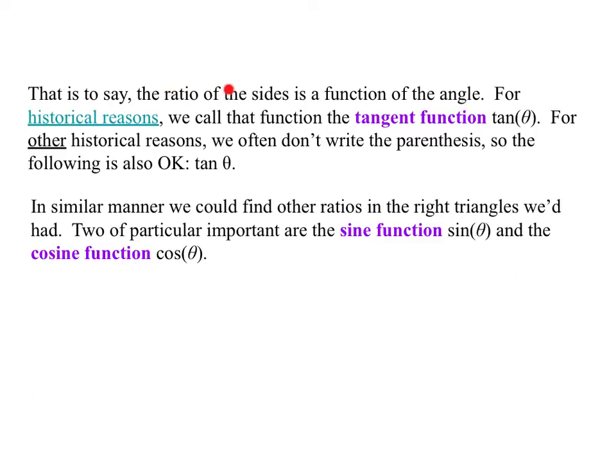That is to say, the ratio of the sides is a function of the angle. For historical reasons, we call that function the tangent function, and we abbreviate it as tan of theta. For other historical reasons, we often don't write the parentheses, so we also can write tan theta. I would recommend writing the parentheses, but I say that knowing that I don't always write the parentheses. Tangent theta without the parentheses, the naked function call, predates our concept of functions, and so the notation hadn't standardized yet. Likewise, that's why it's tan and not like an f or something.